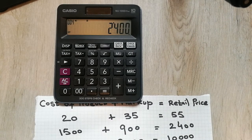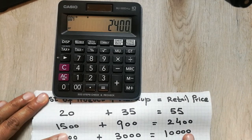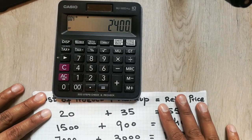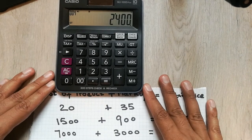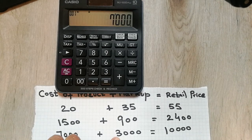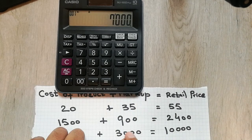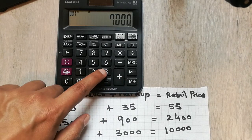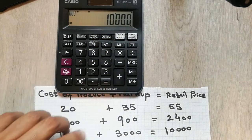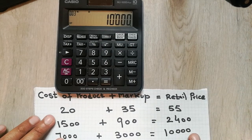Let's move to one last example. The cost of the product is 7000, and the markup — which already includes the operational cost plus profit — is 3000. So 7000 plus 3000 equals 10,000. That is the retail price of the item.